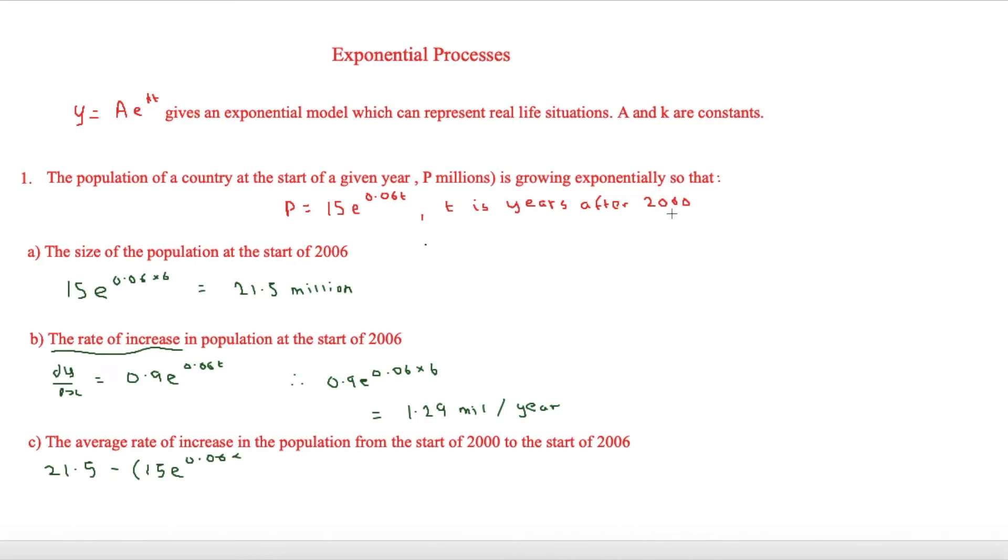Then we need to find out what the population is in 2000. The population in 2000 can be found by 15e to 0.06 times by... if you look at t as years after 2000, well obviously 2000 is 0 years after 2000, so times by 0. Anything to the power of 0 is always 1, so therefore that will be equal to 21.5 minus 15, which equals 6.5.